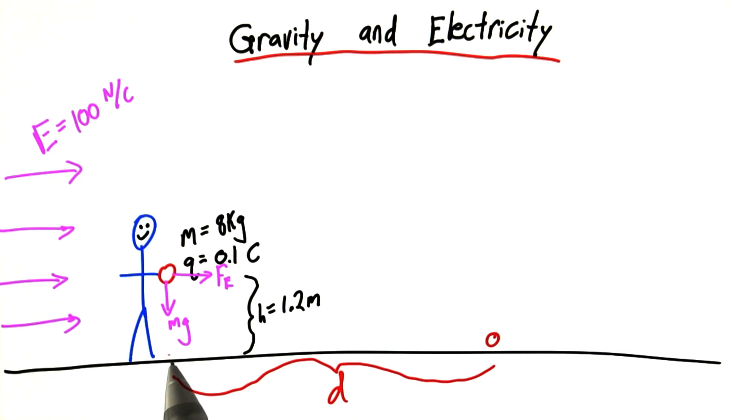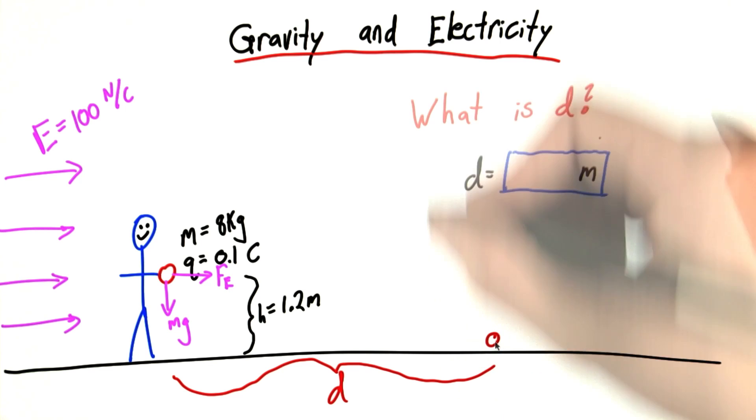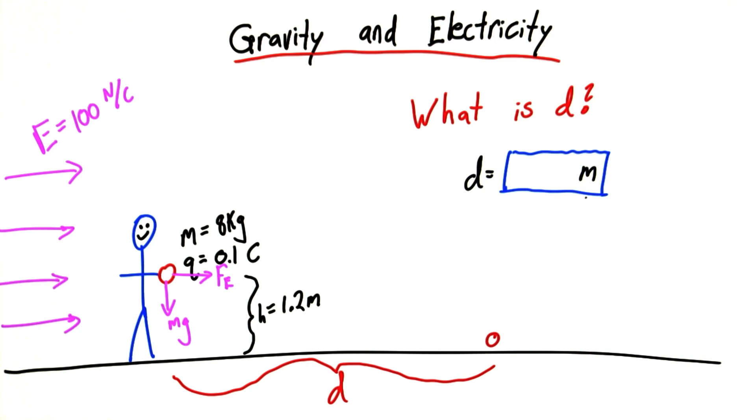I want you to tell me d, the distance away from Ben Franklin where the ball strikes the ground. And you can enter your answer here in meters. I'm warning you this is a quite tricky question. But using what you know about f equals ma, and motion, and electricity, you can tie it all together and I believe you can get this answer. Give it a shot.